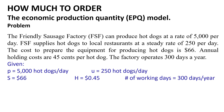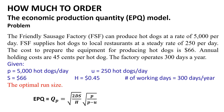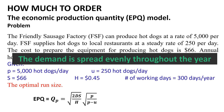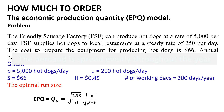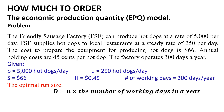To answer the first question, the optimal run size EPQ equals QP equals the square root of (2 × D × S / H) multiplied by the square root of (P / (P − U)). All values required to calculate QP are given except the annual demand D. Since demand is spread evenly throughout the year, D equals 250 multiplied by 300, which equals 75,000 hot dogs per year.